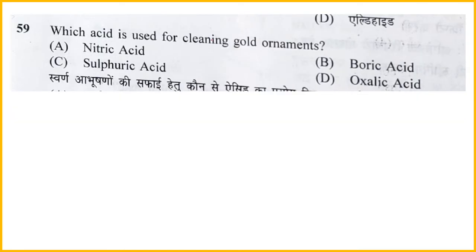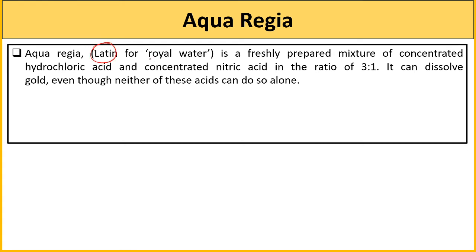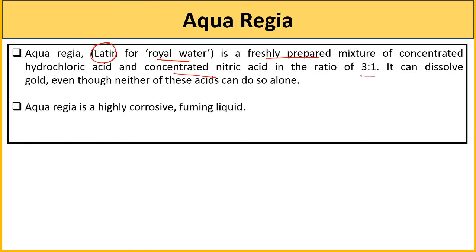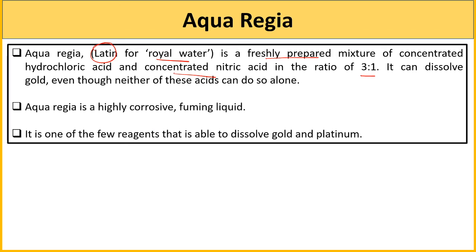Next question - in mein se kaunsa acid gold ornaments ki cleaning ke liye use kiya ja sakta hai? Sahi answer hai nitric acid. Yahan ek important concept hai - aqua regia, jo NCERT mein mentioned hai. Aqua regia ek Latin word hai which stands for 'royal water'. Yeh ek freshly prepared mixture hota hai jisme concentrated hydrochloric acid aur concentrated nitric acid 3:1 ratio mein hota hai. Yeh mixture gold ko dissolve kar sakta hai. Stand alone, HCl ya HNO3 gold dissolve nahi kar sakte, lekin 3:1 mixture mein kar sakte hain. Aqua regia highly corrosive aur fuming liquid hai - one of the few reagents jo gold aur platinum dono dissolve kar sakte hain.